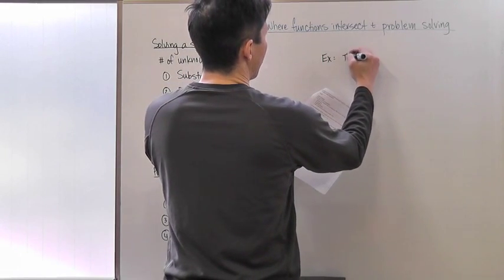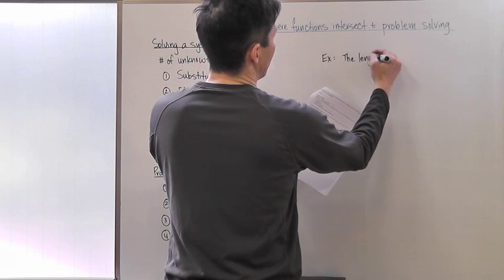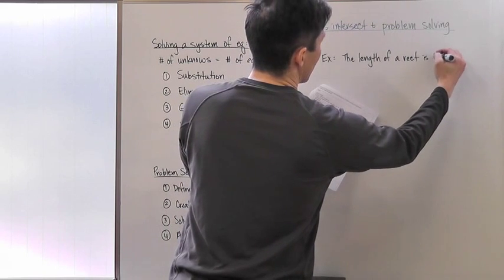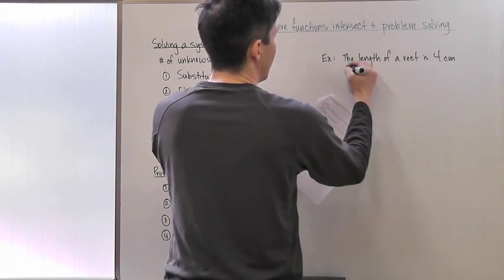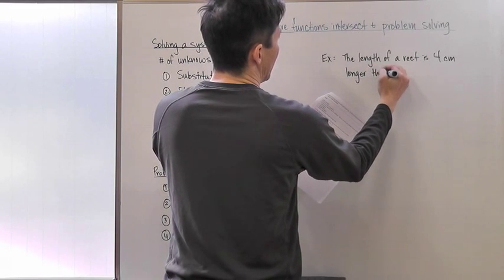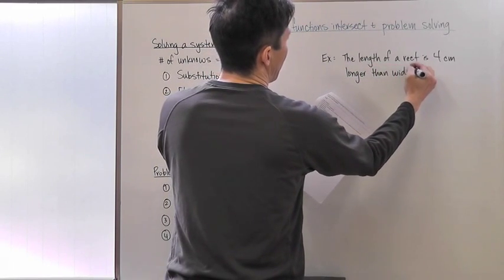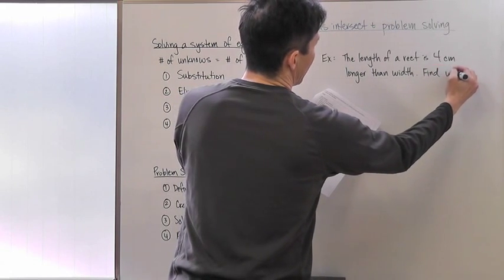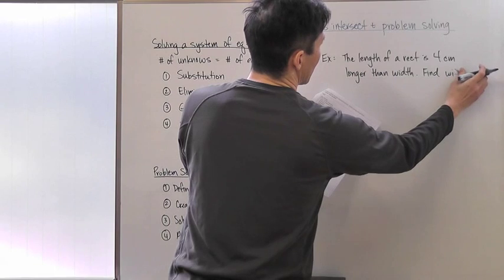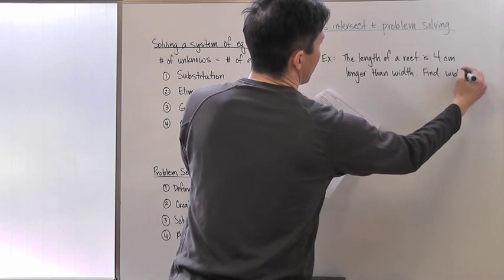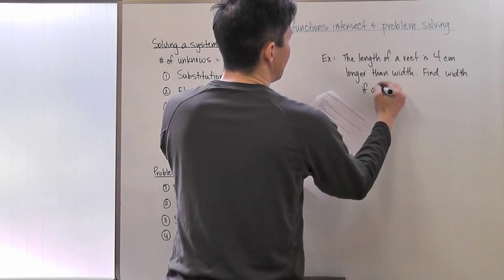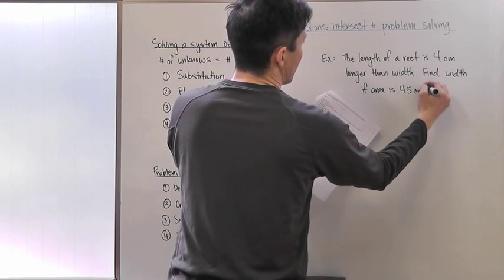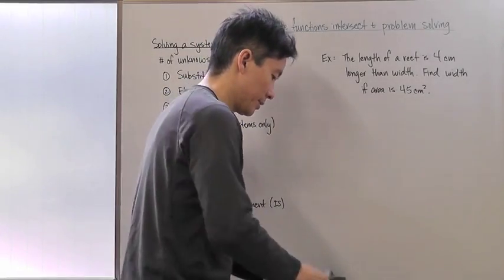The length of a rectangle is 4 centimeters longer than the width. Find the width if the area is 45 square centimeters.